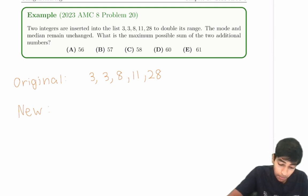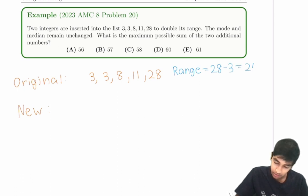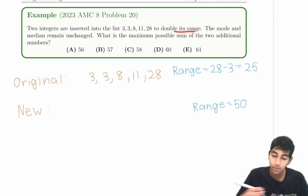We're given that two numbers are inserted so the range is doubled. Notice that the range - what is the range of this first sequence? That's, remember, range is highest term minus lowest term, so 28 minus 3 equals 25. So for this new sequence, the range must be 50, because it has to be double of the original sequence.